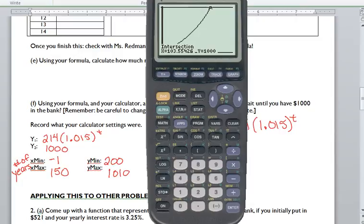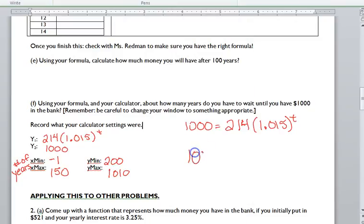It takes 103.554 years. We'll go ahead and say that's 103 and a half years. Halfway through that 103rd year, we will have $1,000. So it really didn't take that much more than 100 years. It just took three and a half more to get up to $1,000.